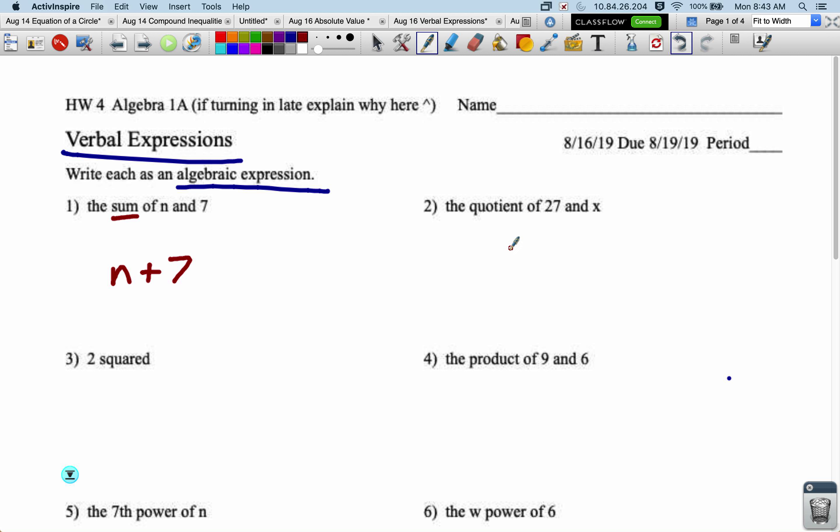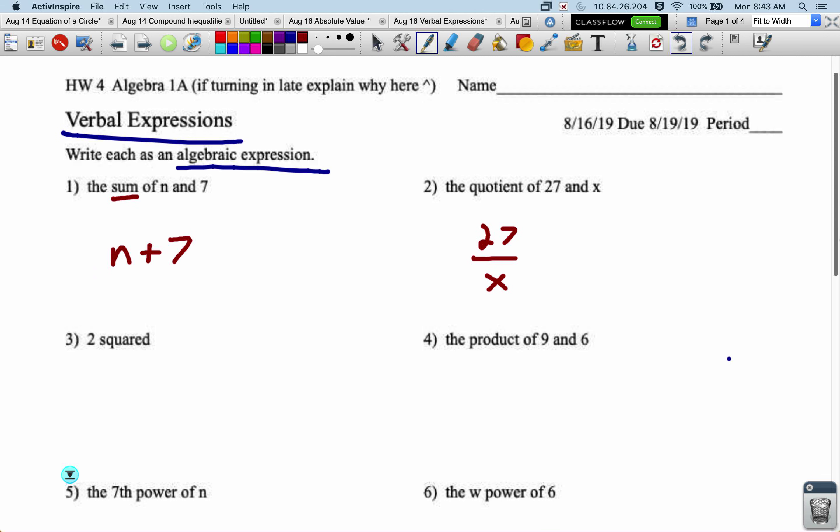For quotient, that tells us that we need to divide. So the quotient of 27 and x, I'm going to write it as a fraction with the 27 on top. Our division should always be written with fraction lines now.